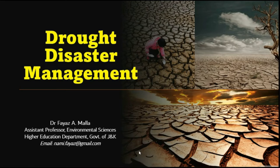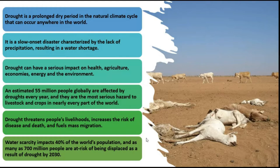Welcome dear learners. Today we are going to discuss drought disaster management. Droughts are very deadly natural environmental hazards because they are directly related to one of the three basic requirements of any form of life - water, air, and food - and indirectly related to food famines because crops, plants, and animals exclusively depend upon water.